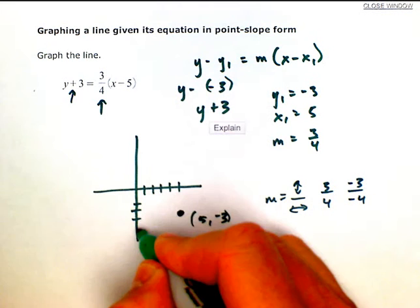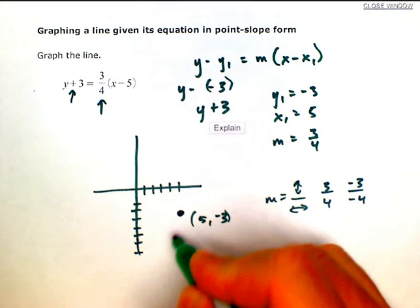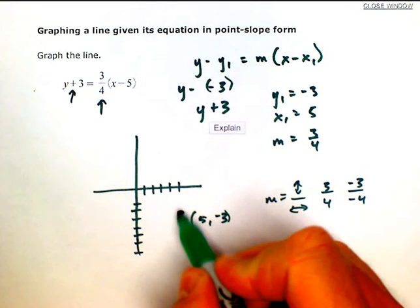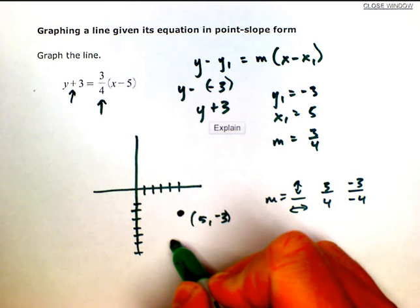Which would be 1, 2, 3, and 4. We could go down 3—down 1, 2, and 3—and backwards 4: 1, 2, 3, and 4.